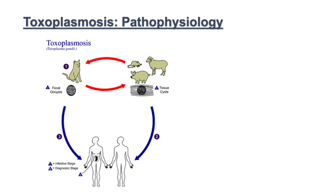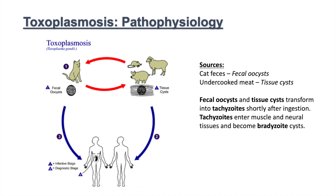The hosts include cats and livestock. Humans can be infected from cats through fecal oocysts, and from livestock through undercooked meat containing tissue cysts. When someone ingests either fecal oocysts or tissue cysts, they transform into what is known as tachyzoites shortly after ingestion. These tachyzoites then enter the muscle and neural tissues of the individual and become bradyzoite cysts.